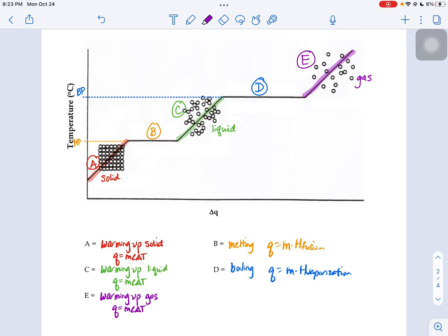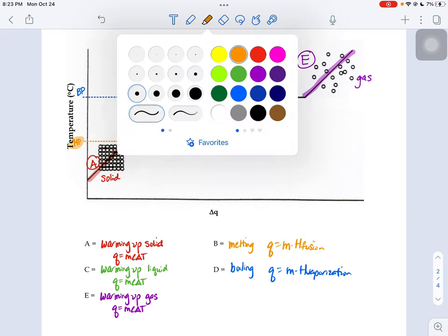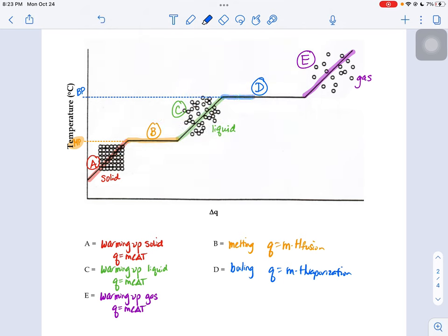When you're in sections B and D, there is no temperature change. This guy's holding steady at what we call the melting point of the substance. And section D of the graph, also holding steady at the substance's boiling point.